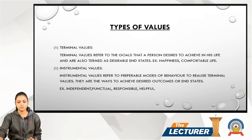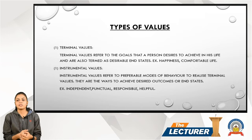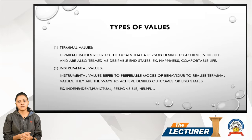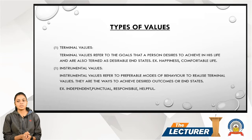There are two types of values. First is the terminal value and second is the instrumental value. Terminal value refers to the goals that a person desires to achieve in his life, and are also termed as desirable end states, like happiness and comfort.